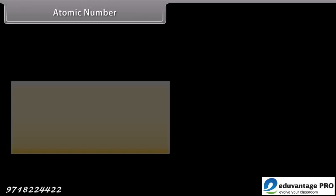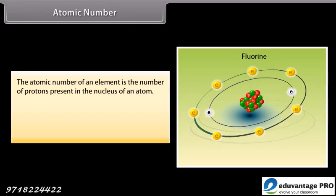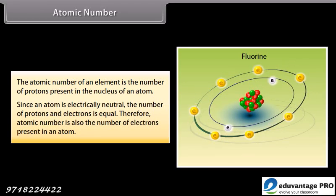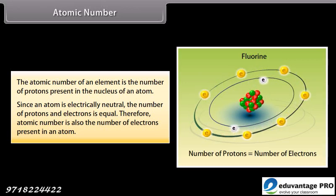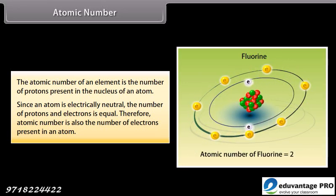Atomic number. The atomic number of an element is the number of protons present in the nucleus of an atom. Since an atom is electrically neutral, the number of protons and electrons is equal. Therefore, atomic number is also the number of electrons present in an atom.